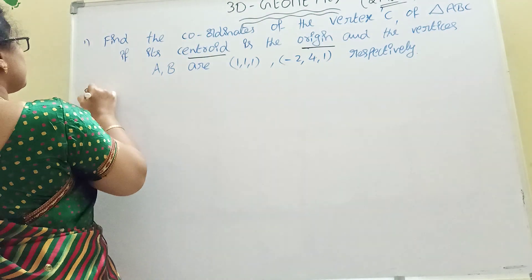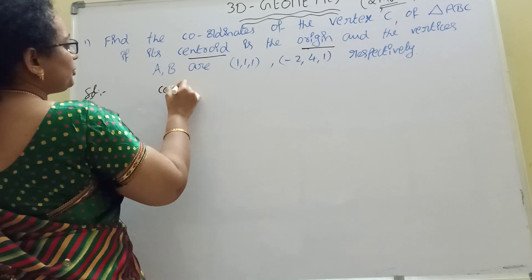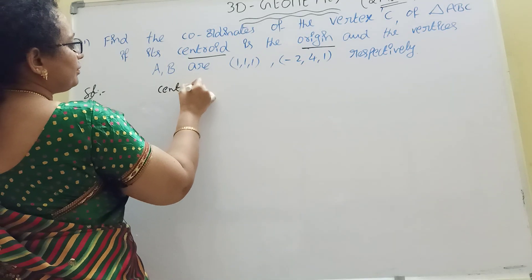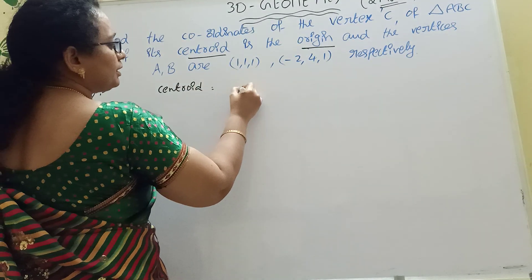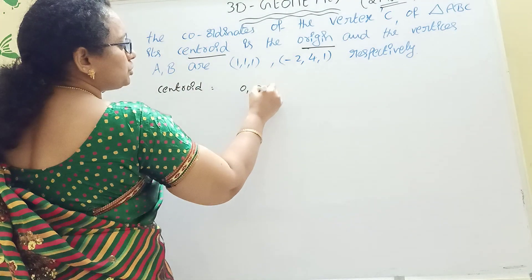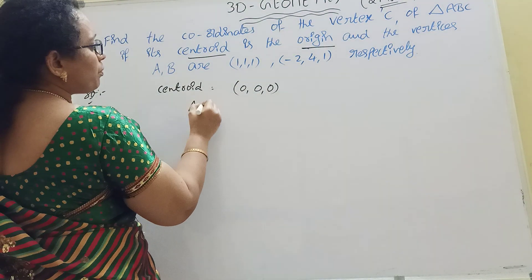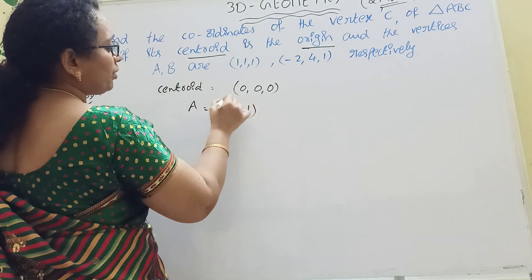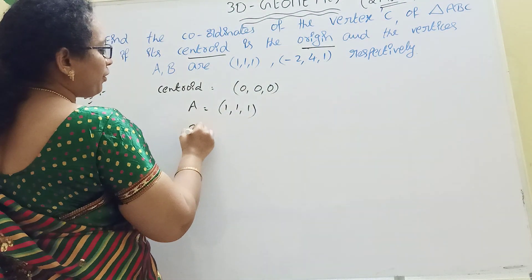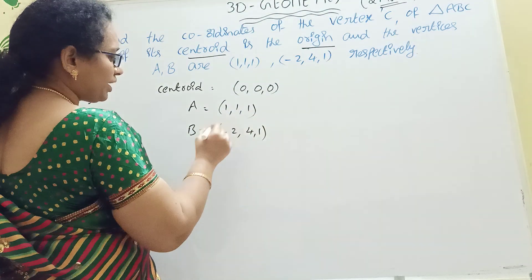Now listen here. This is a very important model. What is given? Write down the centroid, in which the origin is 0,0,0. Centroid is given. And the first point A is given as (1,1,1). B point is given as (-2,4,1).